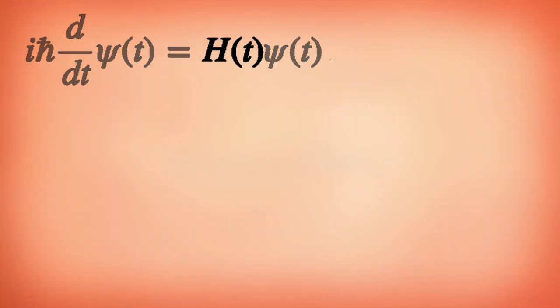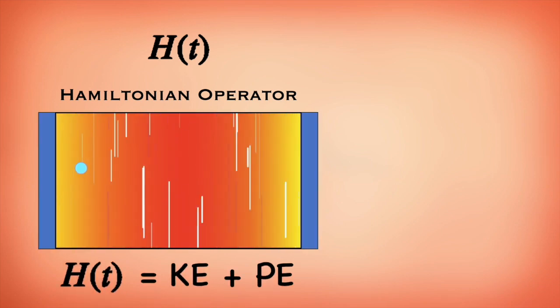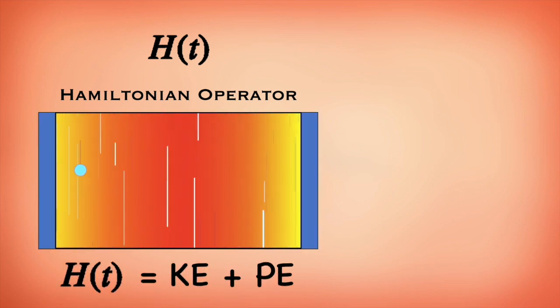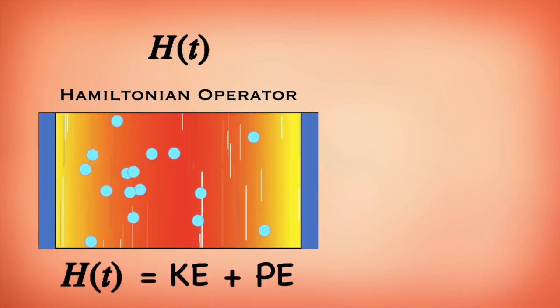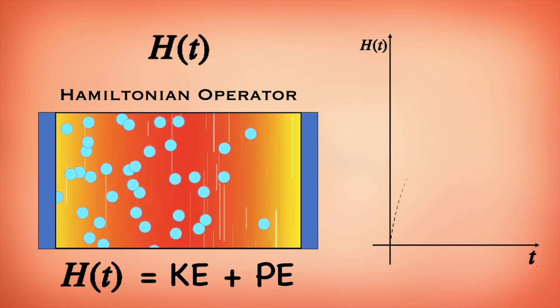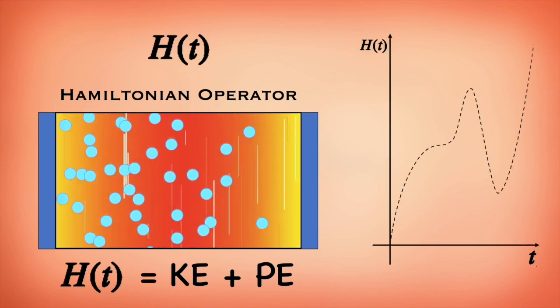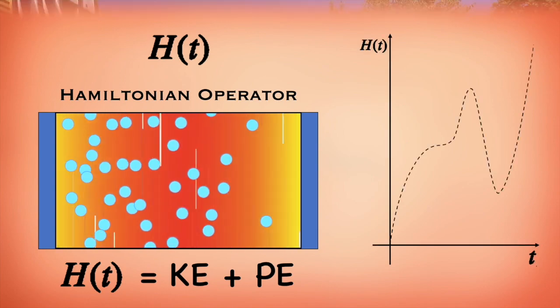Moving on to the Hamiltonian operator. It's a simple sum which adds the kinetic and potential energies of just one particle or many particles at a point of space-time. In different points, this Hamiltonian value will change, just like the wave function.